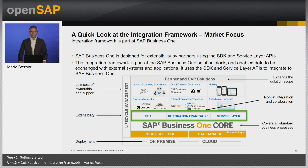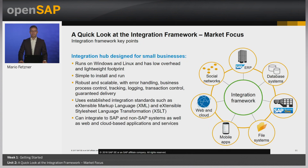SAP Business One is designed for partners to extend core functionality using the SDK and service layer APIs. The integration framework is part of the SAP Business One solution stack and enables SAP Business One to send, publish, and exchange data with external systems and applications. The integration framework serves as an integration hub designed specifically for small businesses. It runs on Windows and/or Linux with low overhead and a small footprint. It is simple to install, easy to get up and running, yet robust and scalable, providing necessary error handling, tracking, and logging.